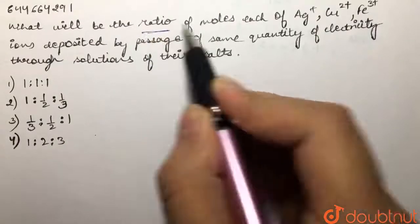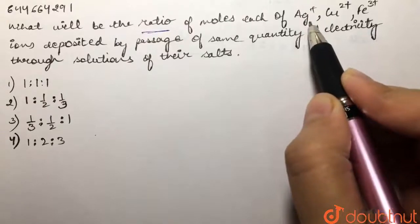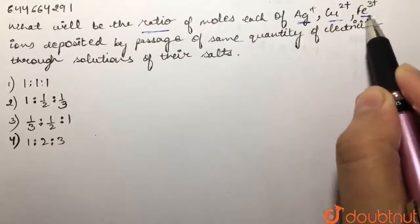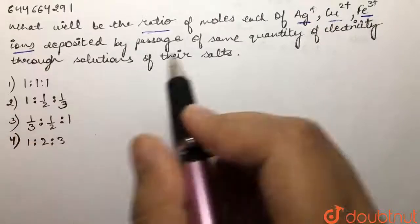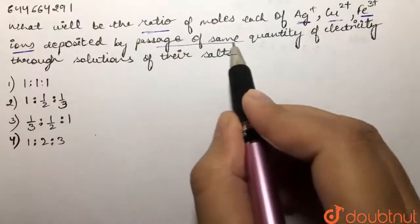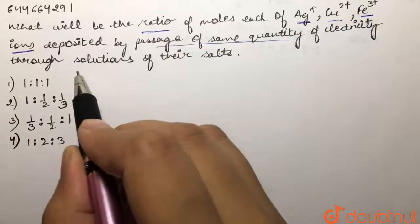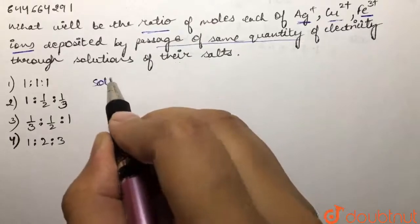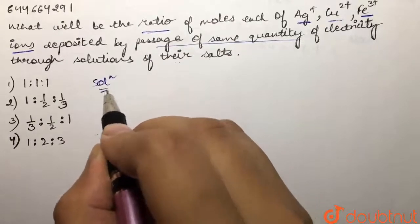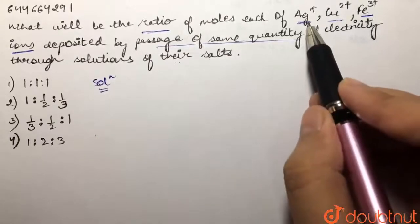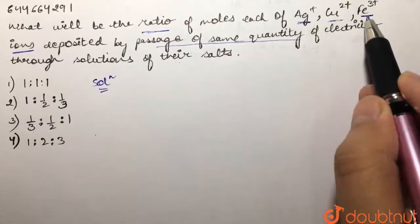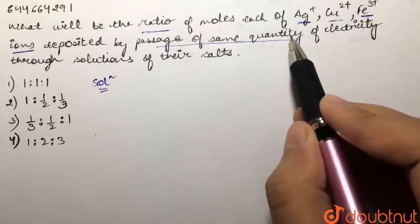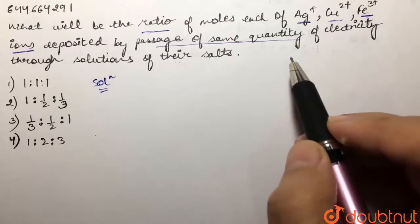Our question is: what will be the ratio of moles of each of silver positive, copper 2 positive, and iron 3 positive ions deposited by the passage of the same quantity of electricity through solutions of their salts? We are supposed to give the ratio of moles of each silver, copper, and iron ions deposited by the passage of same quantity of electricity.